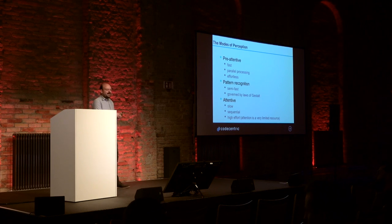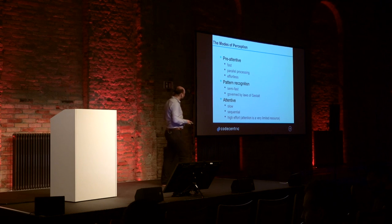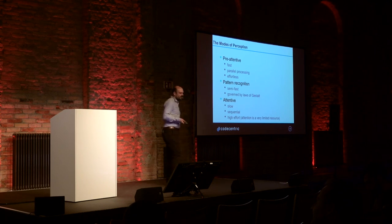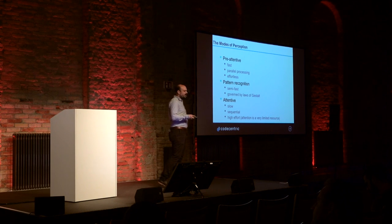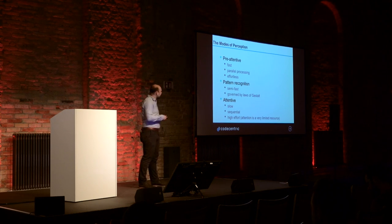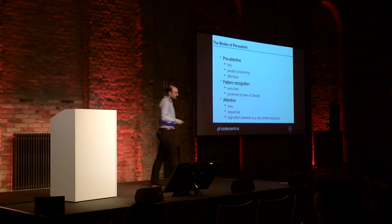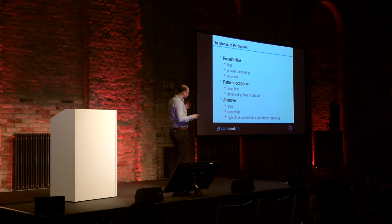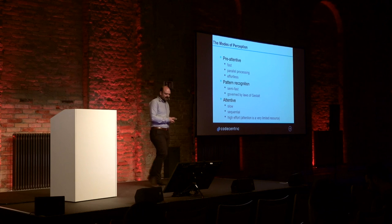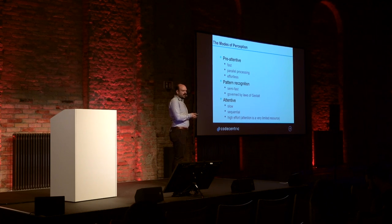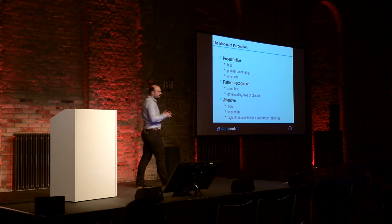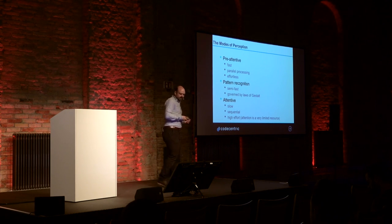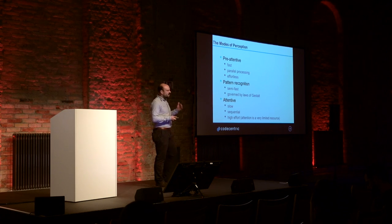The second mode is about pattern recognition. I wrote 'semi-fast,' but basically this is something you can train. Any expert for a certain topic knows that the time for seeing the important pieces of a graphic or visualization decreases with experience and training. There's also the so-called laws of Gestalt — basically the way our brain forms these patterns in our mind. The third mode is slow; it's a sequential search, and that's what you had to do in the first graphic on the right side — searching through all the items to find the outlier, making comparisons between all the objects. That's slow, and that's not the way we want to transfer information.